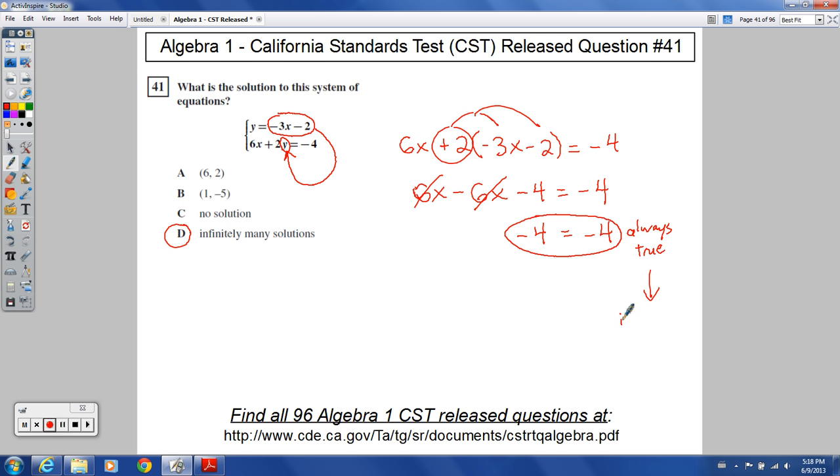So, if you have something that ends up being always true, infinitely many solutions. You may have a question like this where you end up with—this does not apply to this particular problem—but, you might end up with, you work out your problem and you get something. You get this equals, you get like, say, negative 3 equals 2. This would be never true. And so, you would say, no solutions.